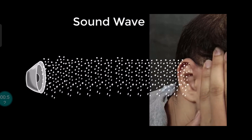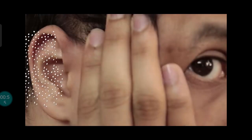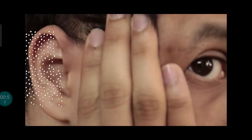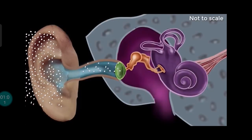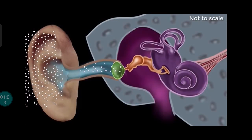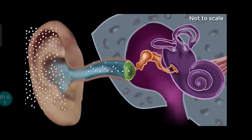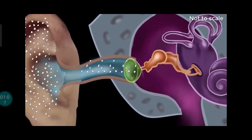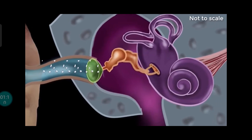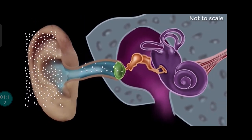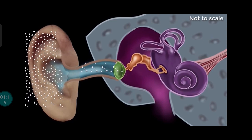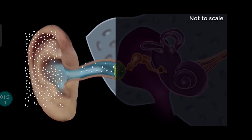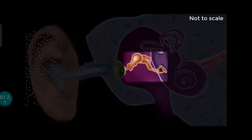Well, for that we need to look at our ear carefully — the entire structure of the ear. So let's look at how the different parts of the ear work together to make us experience sound. Our ear can be divided into three parts: the outer ear, the middle ear, and the inner ear.